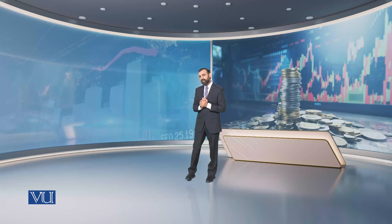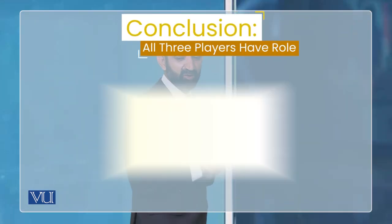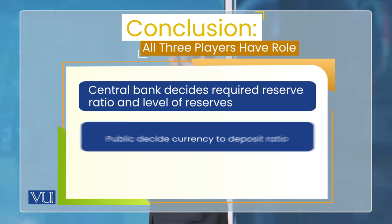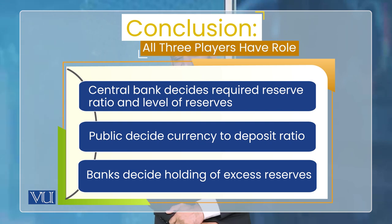Banks can hold excess reserves — so if banks hold excess reserves, deposit creation changes. If people withdraw currency from banks, deposit creation changes. And if neither of these happens, deposit creation will be at a different level. So if we now conclude, our result is that money supply is not under the control of any single institution — as we have just seen.